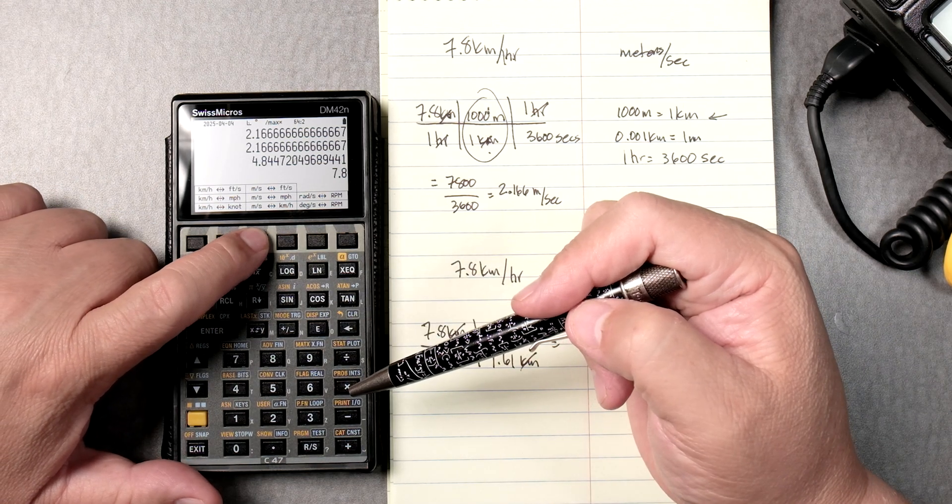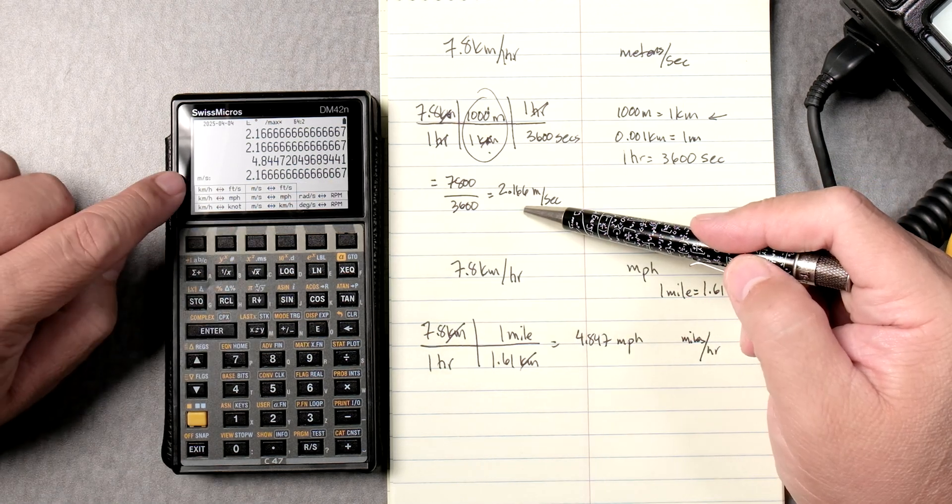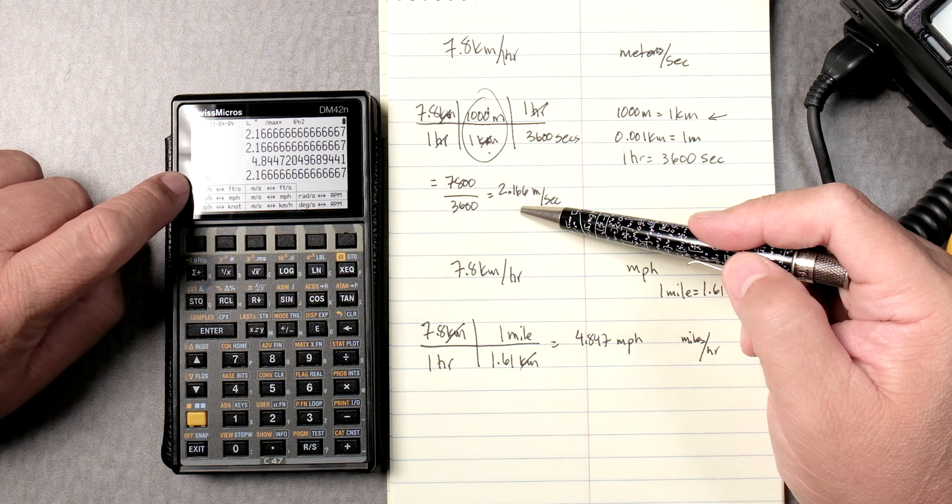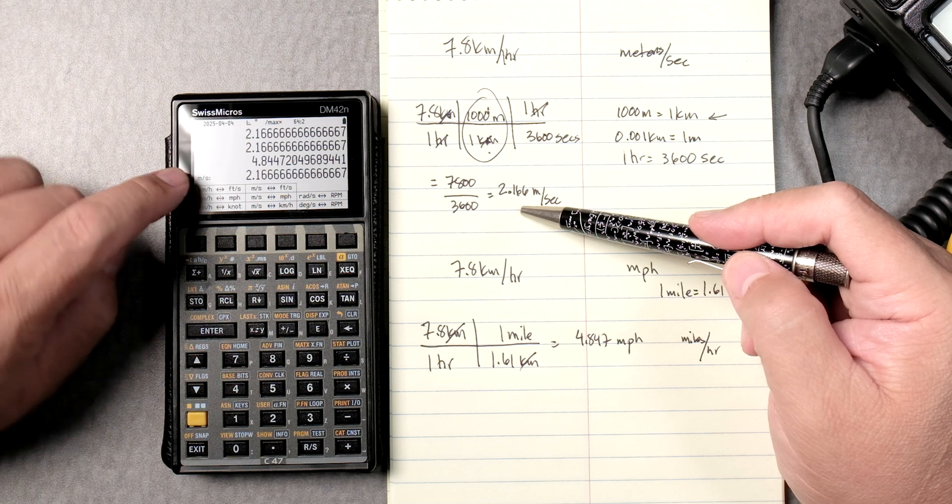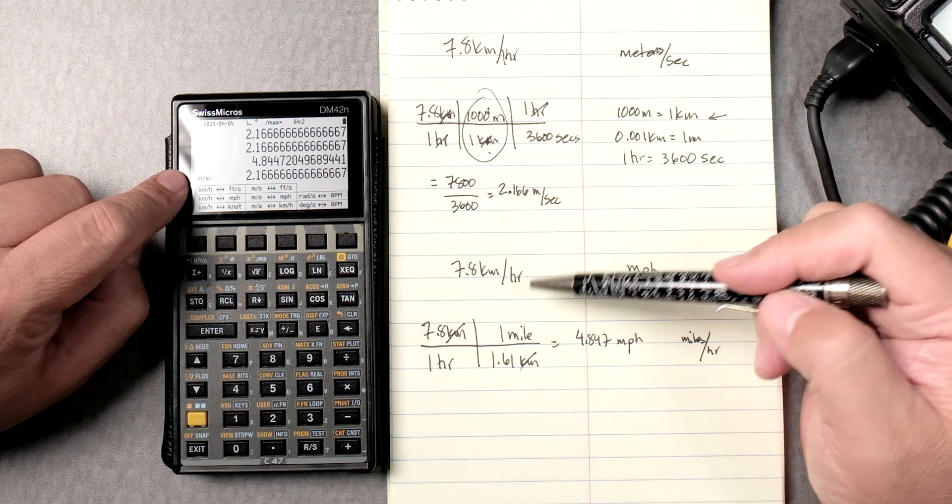So, we press this button. And it gives you 2.166, which is the same thing. And look at over here. It says meters per second. Isn't that cool? On the side right here. It would have been nice if it was over here, but it's still cool. It's over here.